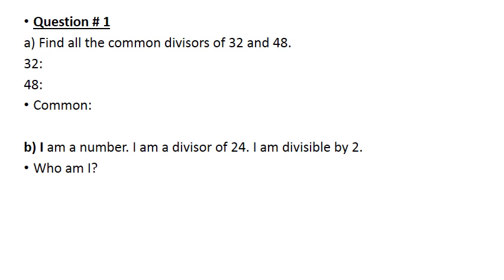First, I start listing the divisors of 32. 32 is divisible by 1, by 2, by 4 — it's 4 times 8, 2 times 16, and 1 times 32.